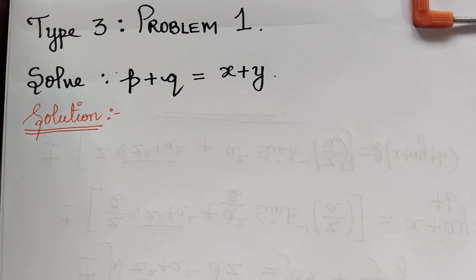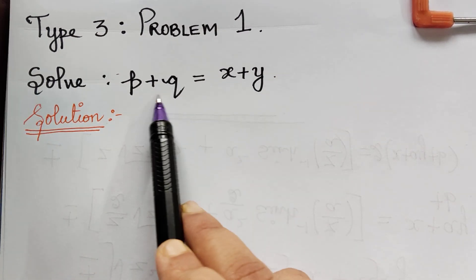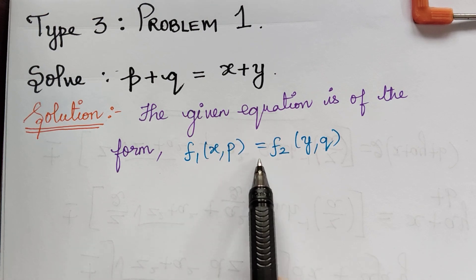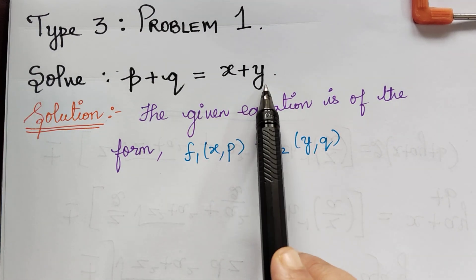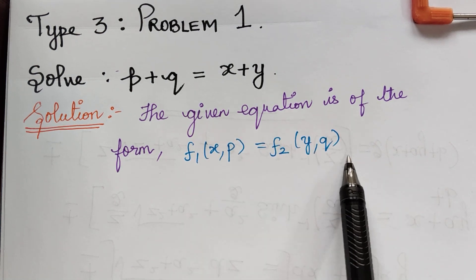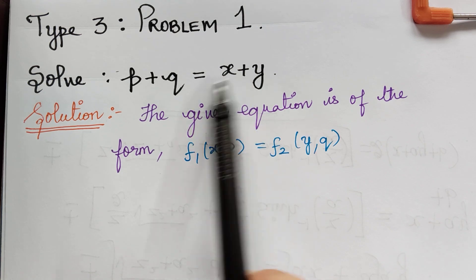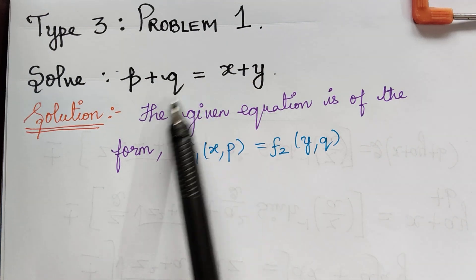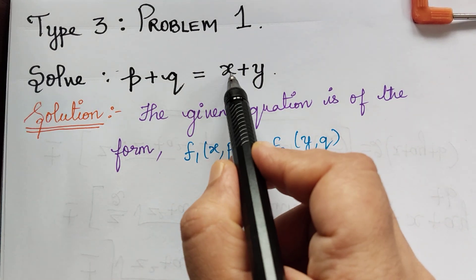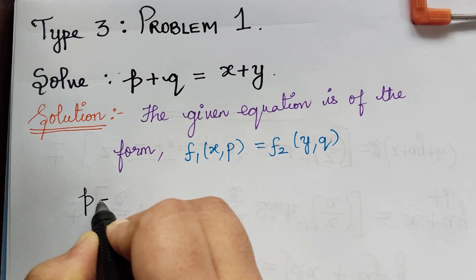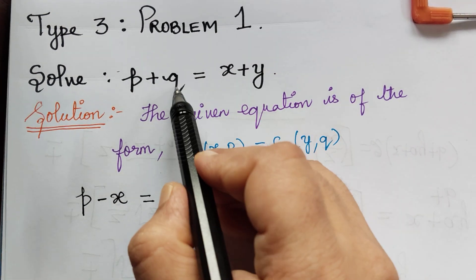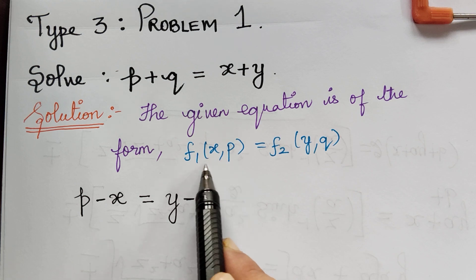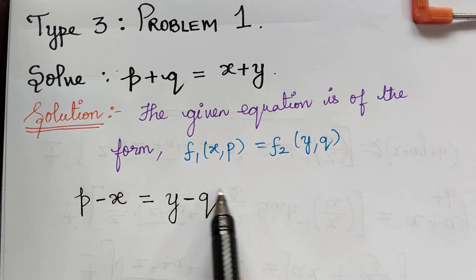We will understand this method by solving a problem. Here we have Problem 1. We observe that z is not present in the given equation. Therefore this is of the form f1(x, p) = f2(y, q). Since z is not present, it is of this form. Now, because it is in this form, we have to gather the terms by variable separable method — that is, gather x and p to the left and y and q to the right of the equation.